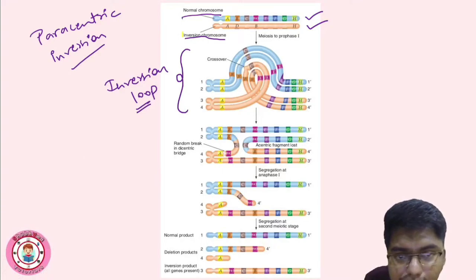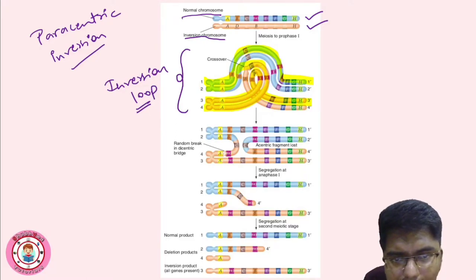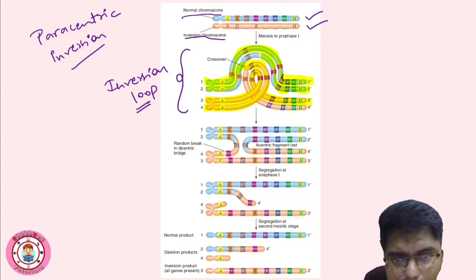After crossover, we see four chromosome products. The first chromosome remains as it is. The second chromosome is changed. The third is also as it is. The fourth chromosome: starting from here, we get a sequence like A D C B A, and this will form a loop — so four chromosomes are produced.